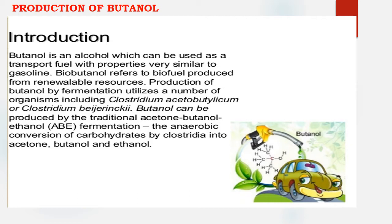In ABE fermentation, microorganisms are able to produce acetone, butanol, and ethanol. The main microorganisms for this are Clostridium acetobutylicum and Clostridium beijerinckii, which are the principal organisms for the industrial production of butanol.